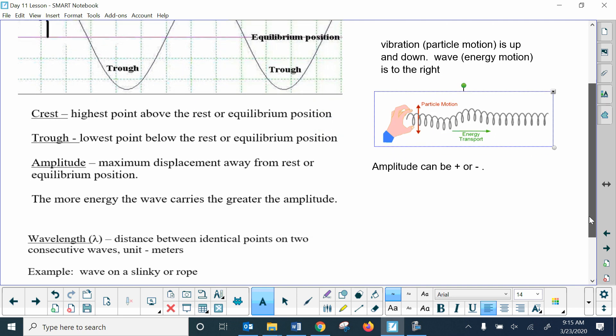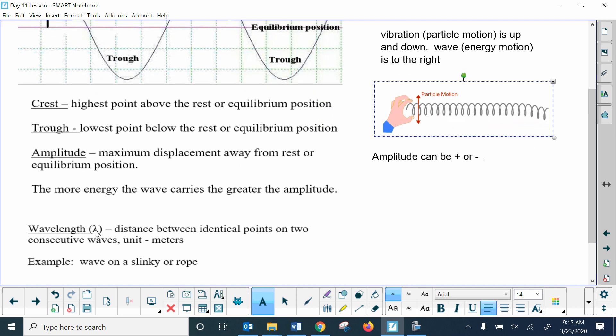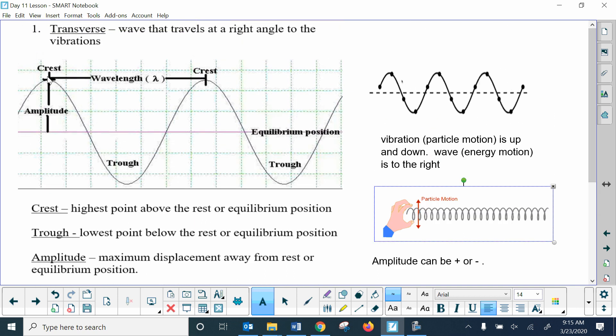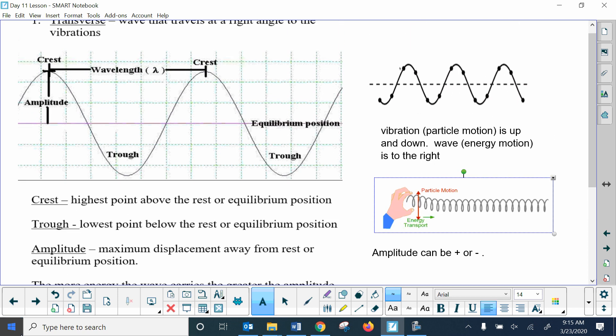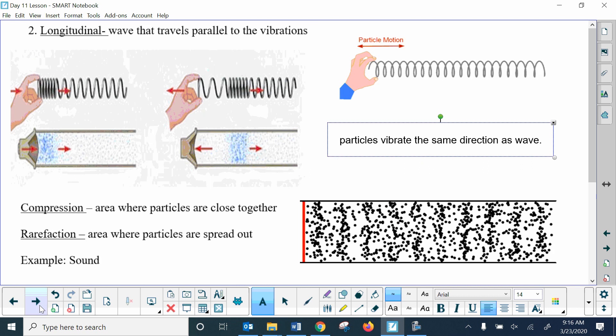Wavelength, this is a Greek letter lambda. That symbol is the distance between identical points on two consecutive waves, and the distance between those is the wavelength. So it's from crest to crest, or you can measure from trough to trough, or you can measure from any equal point. This point to this point, and that would be a wavelength. An example wave on a slinky. This is the slinky GIF. We would do that in class, but we don't get to do it.